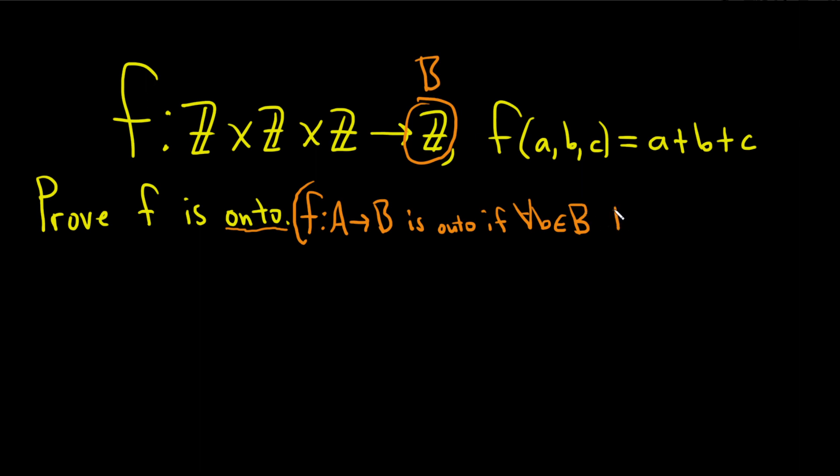There exists an element little a in capital A. Okay, so this here is our capital A in this problem here, such that f of a is equal to b. That's what it means for a function to be onto or surjective or a surjection.